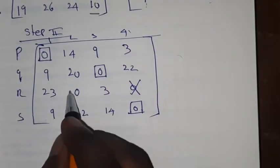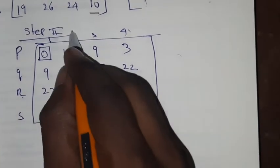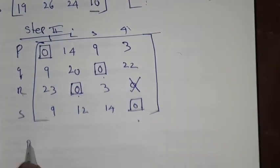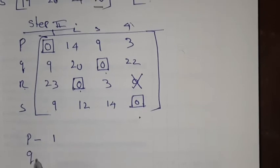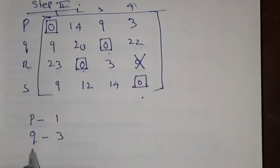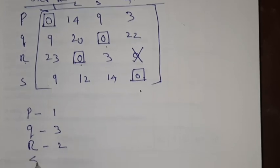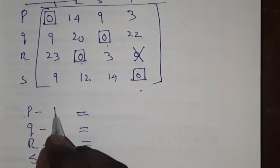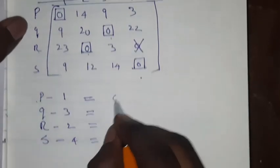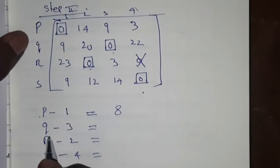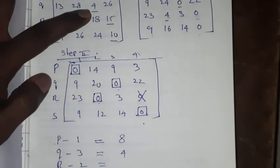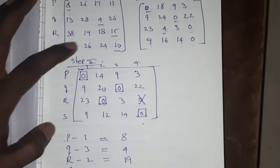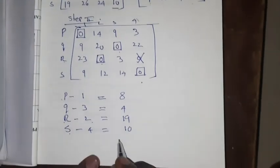Column-wise, there's a single zero in column 2. So R is assigned to task 2. Already assigned are tasks 1, 3, and 4. Looking at the assignments: P goes to 1, Q goes to 3, R goes to 2, and S goes to 4.